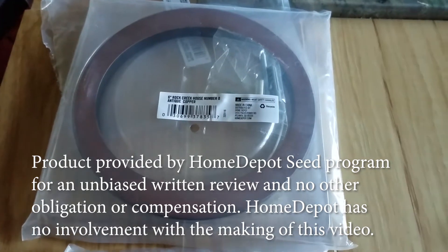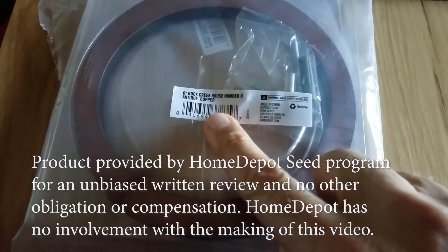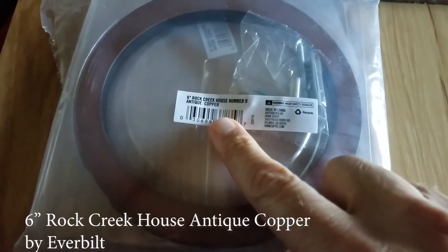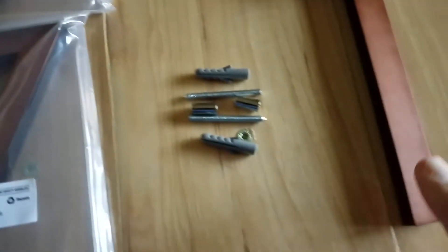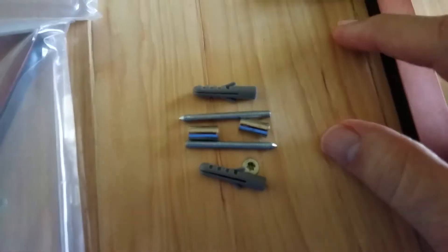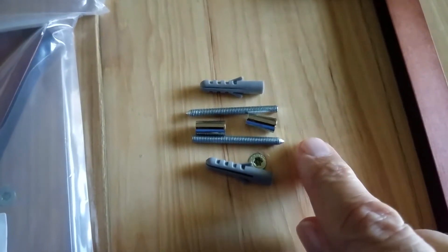Thanks to the Home Depot Seed Program, we have 6-inch Rock Creek house numbers: a zero, a one, and a seven. Inside the kit you get two mollies, two screws with a point at each end, and two sleeves.